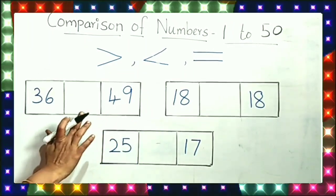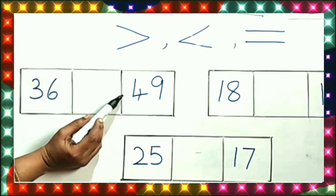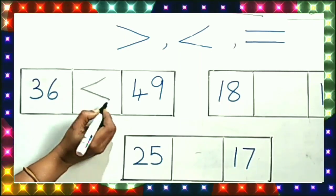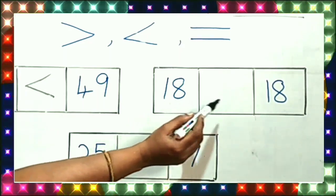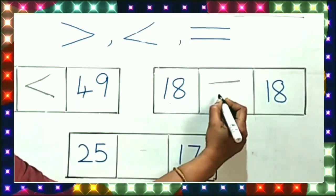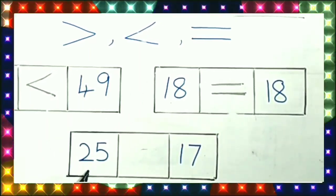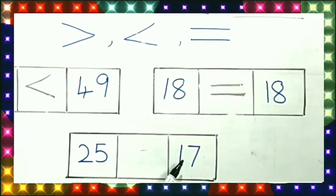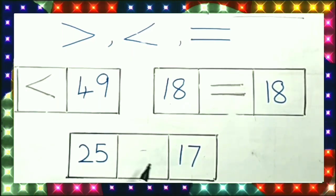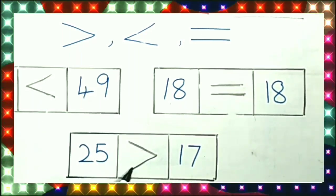Now we will see how to compare the given numbers. See, 36 is here, 49 is here. Which one is the bigger number? 49. Then the crocodile will open the mouth. What symbol is this? Lesser than. Next, 18 is here and 18 is here. The number is the same. Now what symbol will come? Equal to symbol. Next, 25 is there and 17 is there. Which is the bigger number? 25 is the bigger number. Crocodile will open the mouth toward the bigger number side. What symbol is this? Greater than symbol.